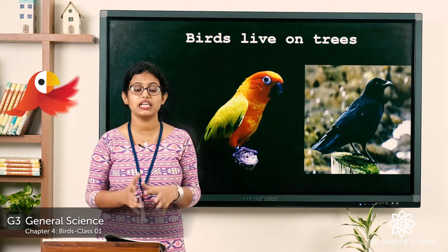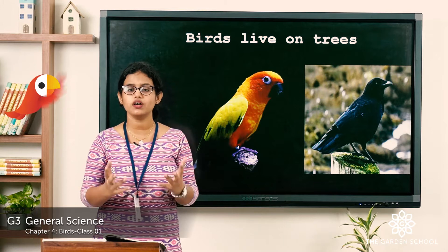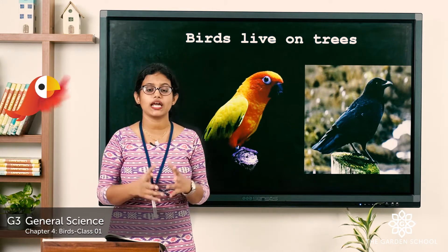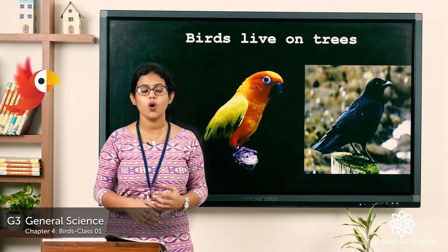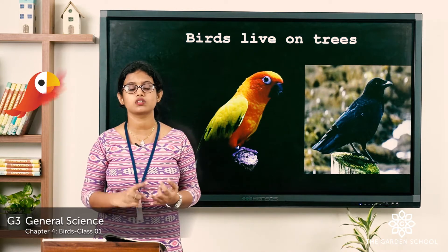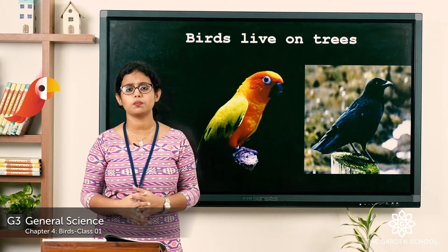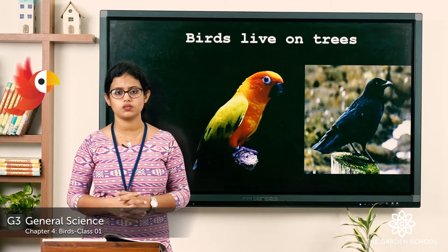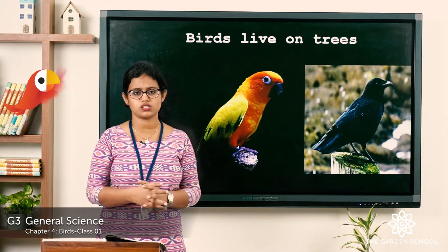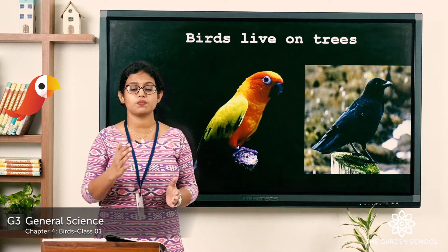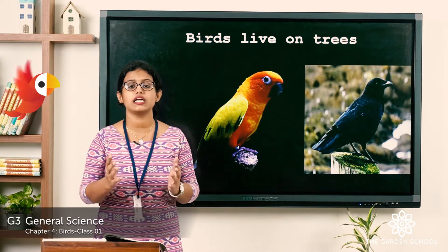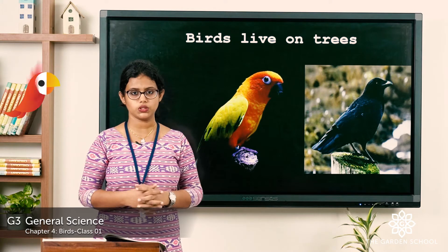So birds live everywhere on earth — there are birds which live on trees, birds which live on land, and birds which live in water. And there are birds like kites and vultures that spend most of their time flying in search of their food.